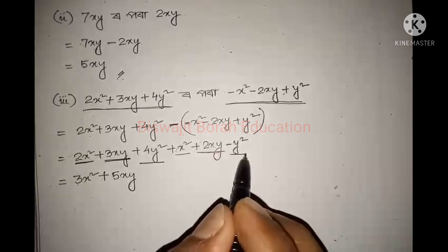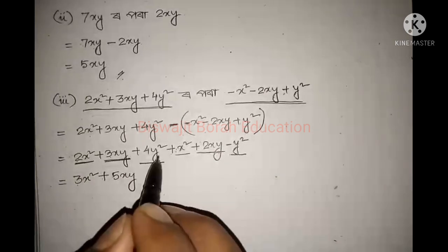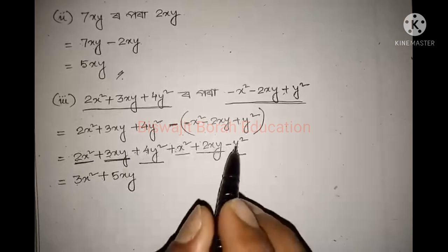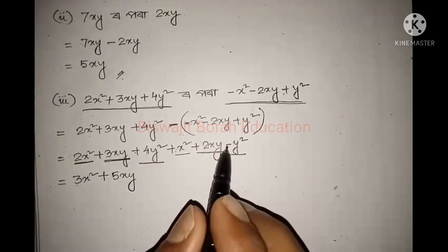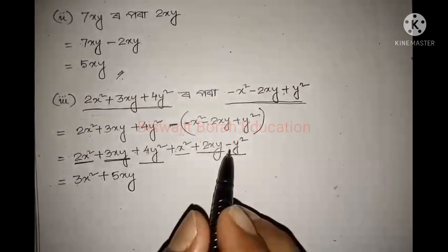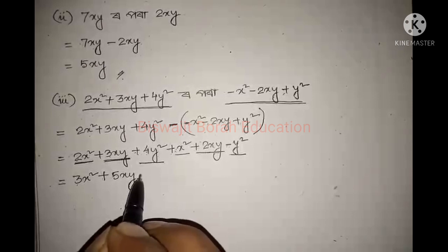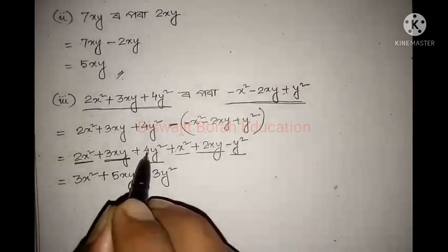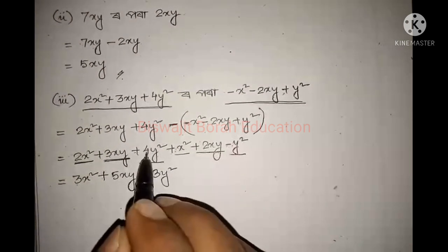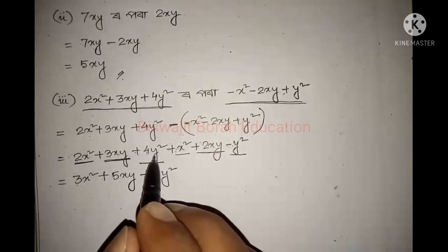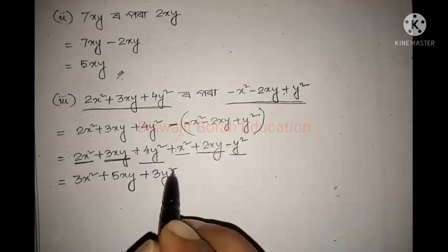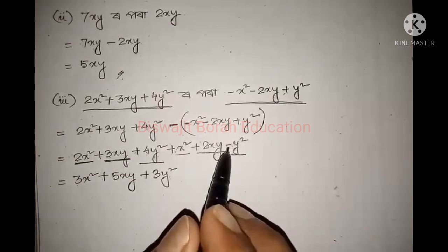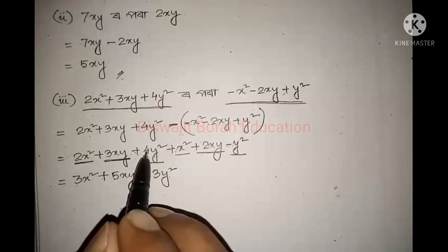Then the next like term: 4y squared and minus y squared. In front of one is plus, in front of the other is minus. So we combine: 4 minus 1 gives 3y squared. So our answer for the y squared term is 3y squared.